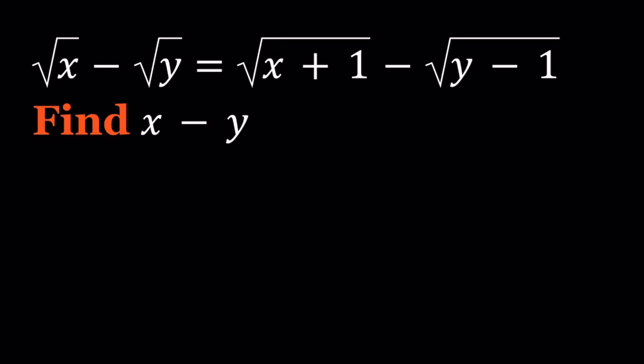Hello everyone. In this video we're going to be solving an interesting radical equation from Russia. We have √x - √y = √(x+1) - √(y-1), and we're going to find x - y. I'm going to present the solution first and then we'll talk about a couple interesting things. Let's get started.